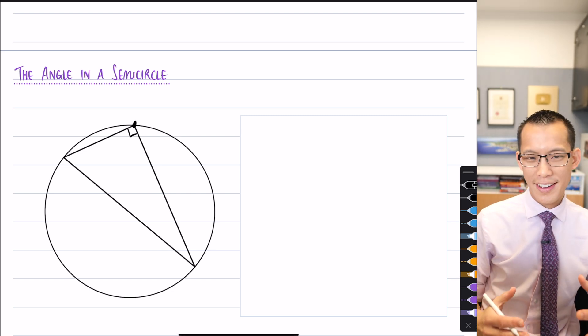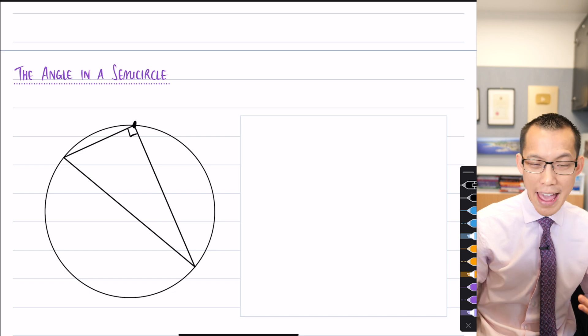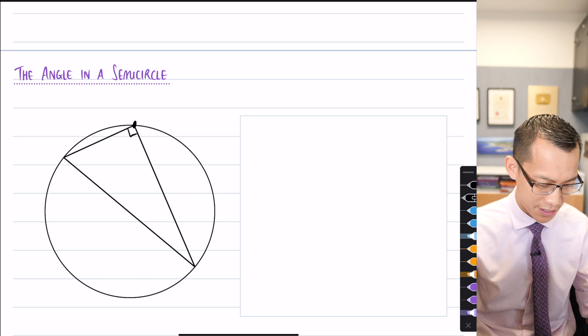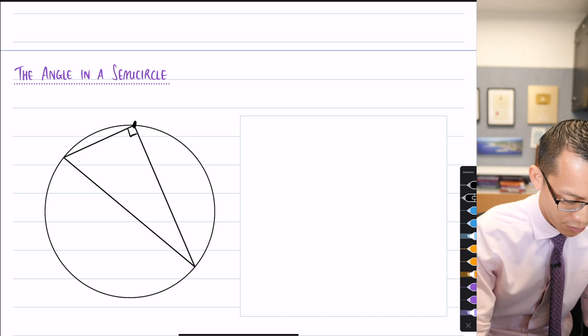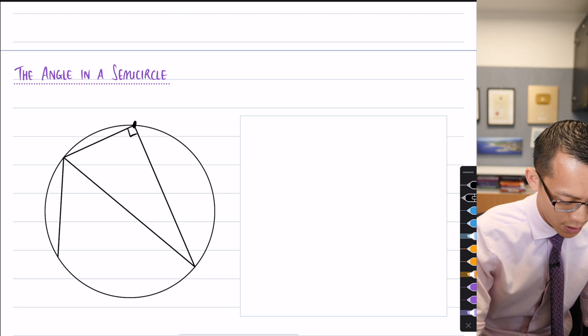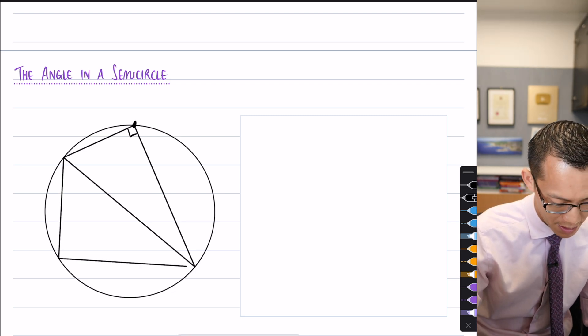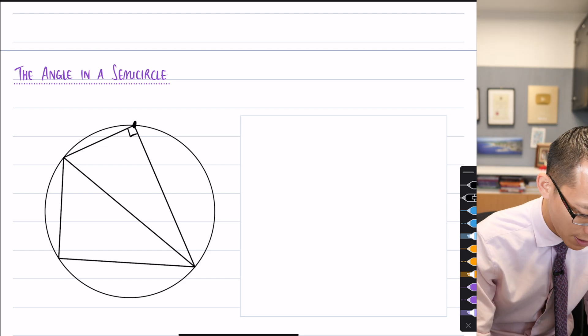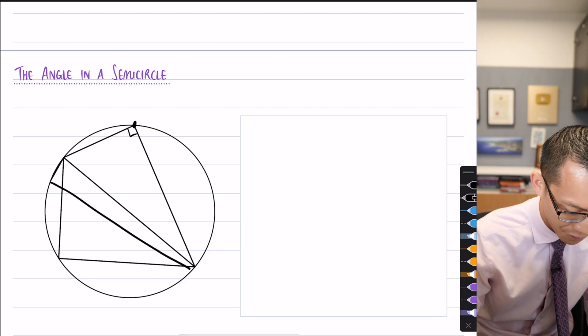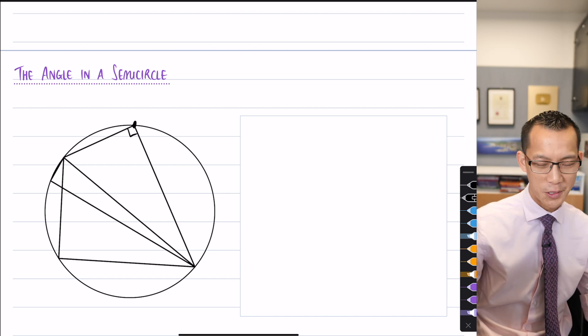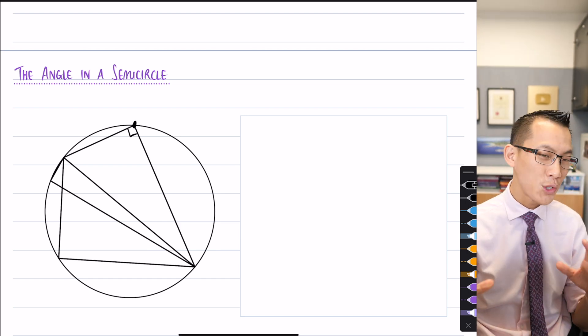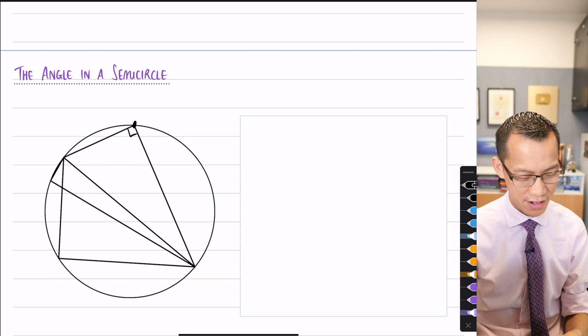If you've got the diameter there, whichever angle you try and make on the circumference, I'll make a few more now just to show you it always works. Here's another one over here, like so. Another right angle. Let me draw like a weird one, just a small one over here. They're all right angles. So, the angle in a semicircle is always 90 degrees.